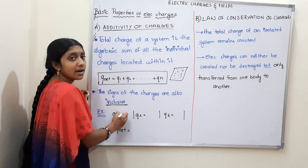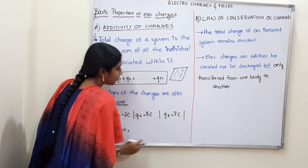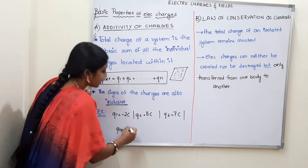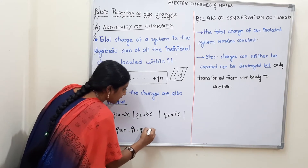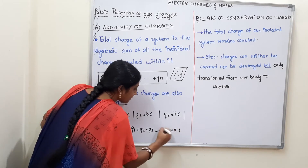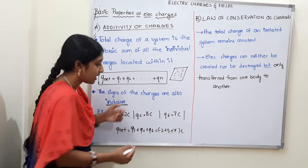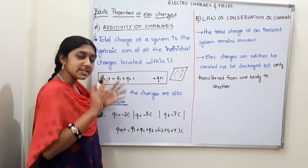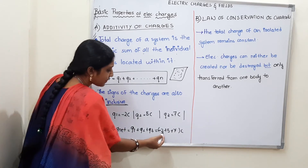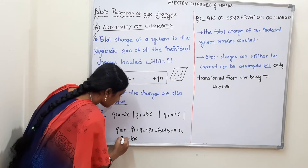For example, Q1 is minus 2 coulombs, Q2 is plus 5 coulombs, and Q3 is plus 7 coulombs. We add the system: Q net equals Q1 plus Q2 plus Q3, which is minus 2 plus 5 plus 7 coulombs. We include the negative charge with its minus sign. So minus 2 plus 5 is 3, and 3 plus 7 is 10. Q net is 10 coulombs.